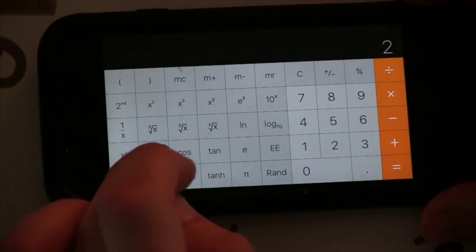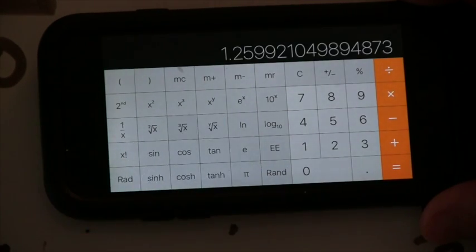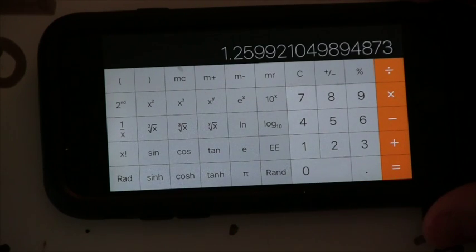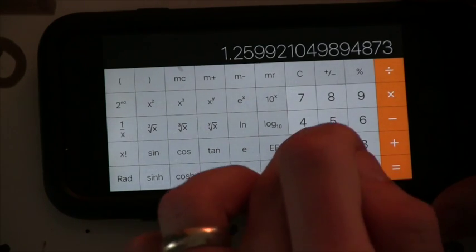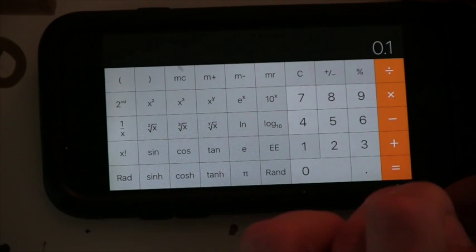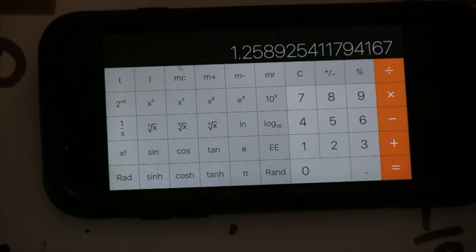So, 2, actually there's a cube root button, 1.259921. Okay, there's no 1 tenth button, but I can do 10 to the 0.1 power, and I get 1.2589.